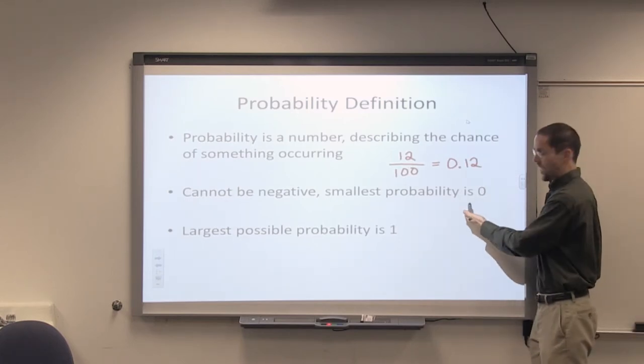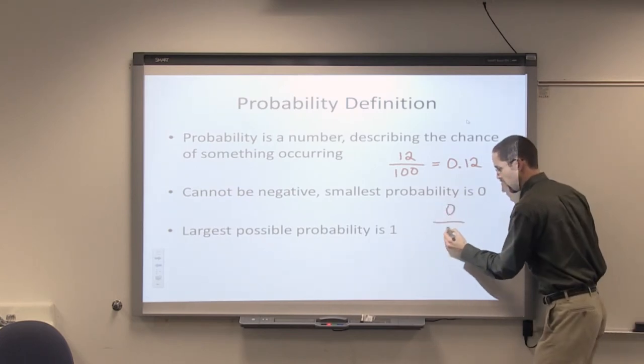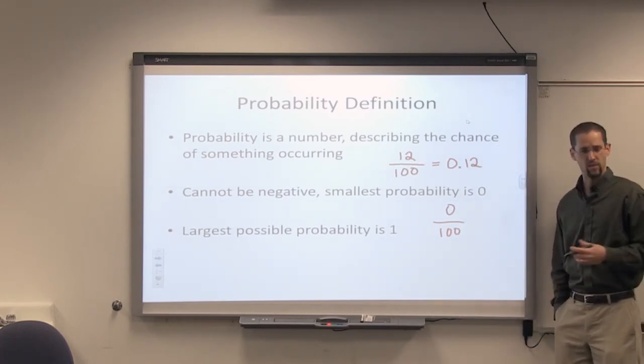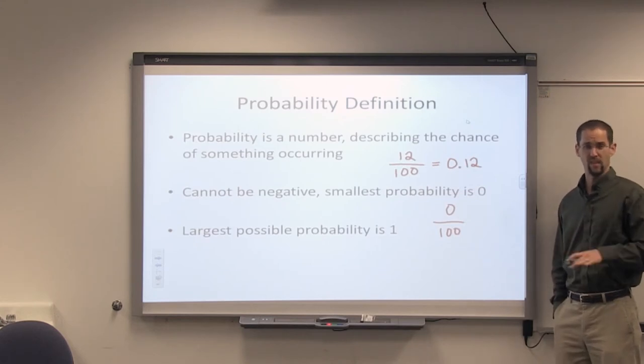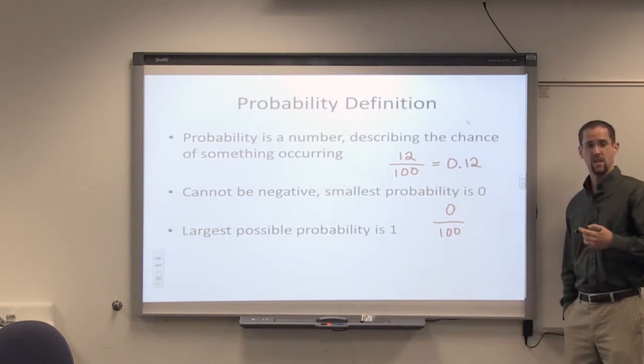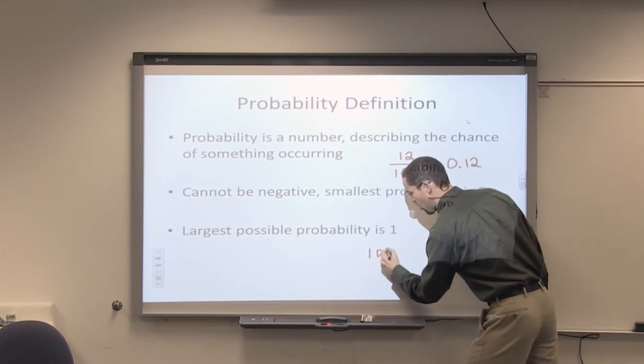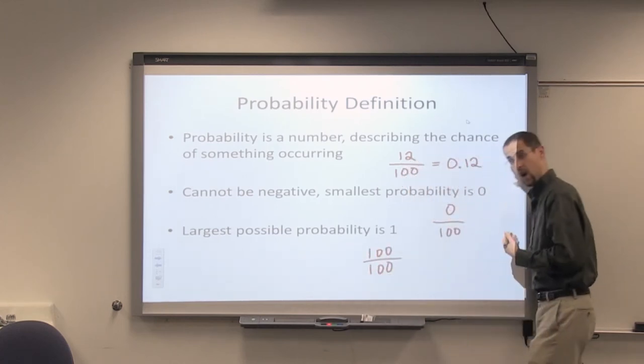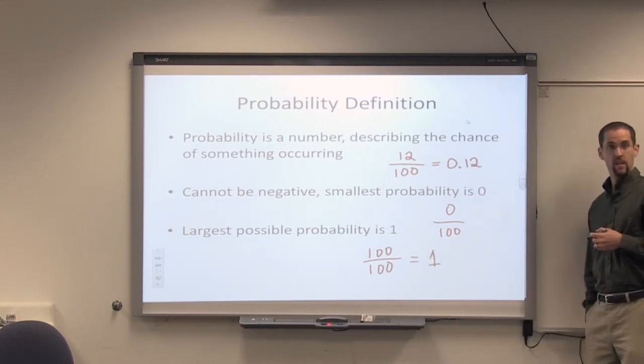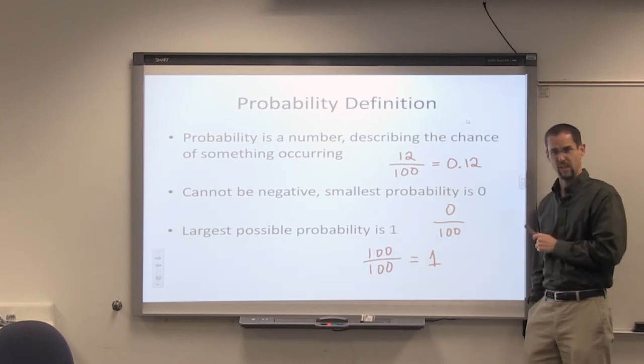A probability can't be negative. Even if you bought 0 raffle tickets, your chance of winning the raffle is 0. That's as low as a probability can go. And the largest it can go is 1, not 100. The probability, even if you bought all 100 raffle tickets out of 100 raffle tickets, that is 1. So your probability of winning, in that case you bought all the tickets, your probability of winning is 1.